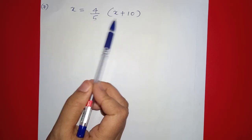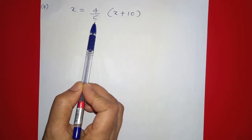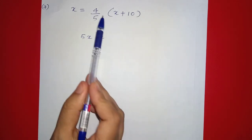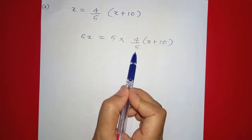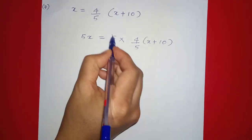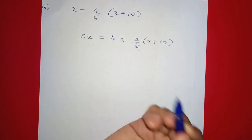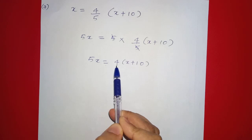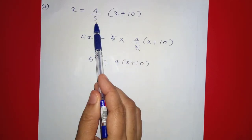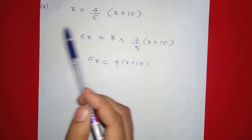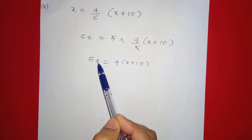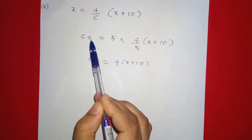Next: x equals 4 by 5 into (x plus 10). We have 5 in the denominator, so we multiply both sides by 5. On the left we get 5x, and on the right the 5 cancels with the denominator, giving 5x equals 4 into (x plus 10).